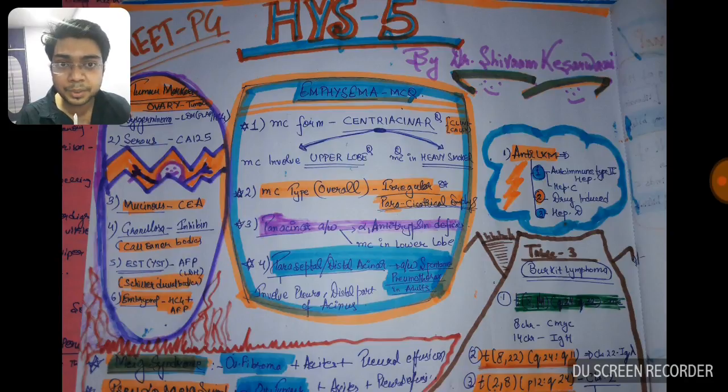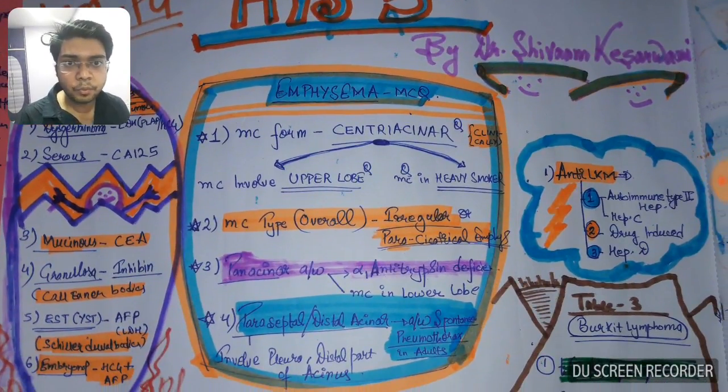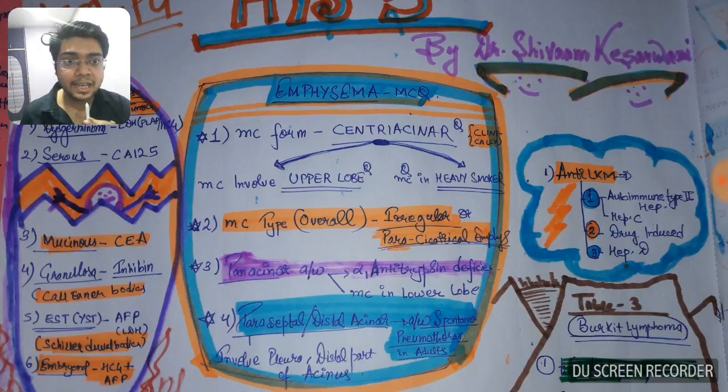The first topic which is coming is emphysema. The most common form of emphysema, if you see clinically and overall, overall it is irregular or paraseptal, but if you see clinically in living persons it is centriacinar.